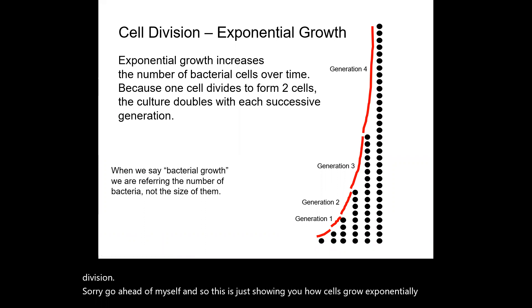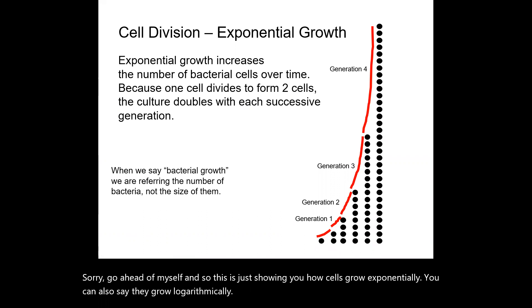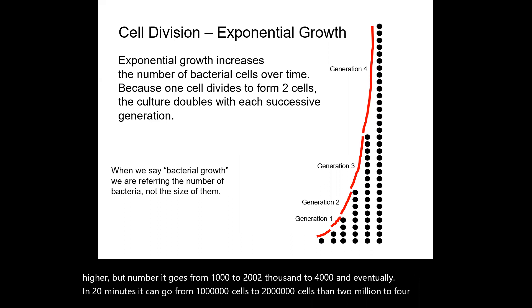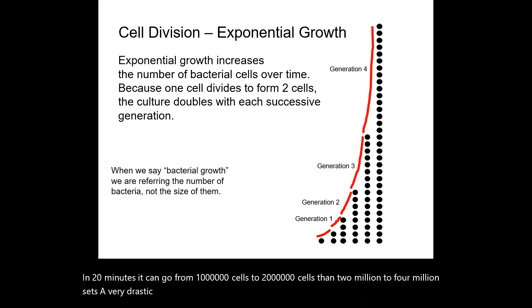You can also say they grow logarithmically because initially it doesn't sound like the population is changing very quickly. One cell becomes two, two becomes four, four becomes eight. But all of a sudden, once you get to a bit higher of a number, it goes from 1,000 to 2,000, 2,000 to 4,000. And eventually in 20 minutes, it can go from 1 million cells to 2 million cells, then 2 million to 4 million. So that's a very drastic increase. So we actually have to use a logarithmic scale when we're trying to graph it because of just how quickly that number increases.